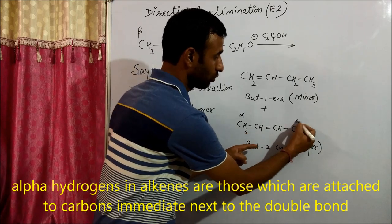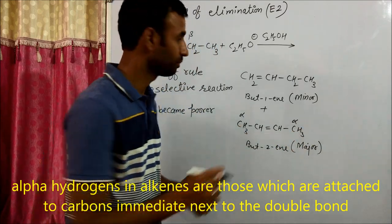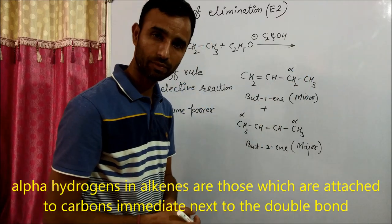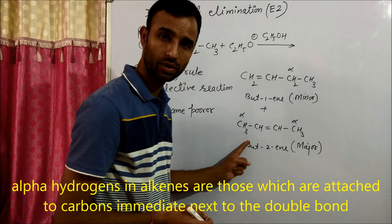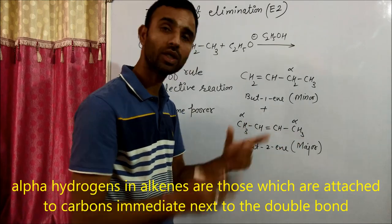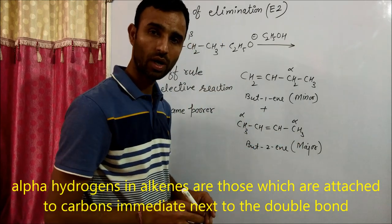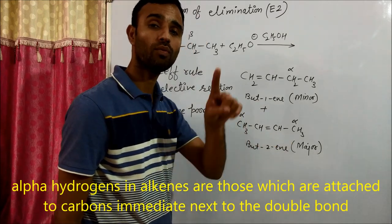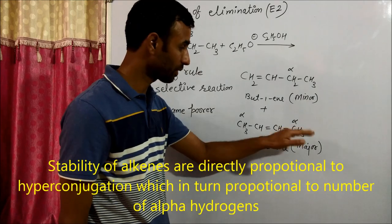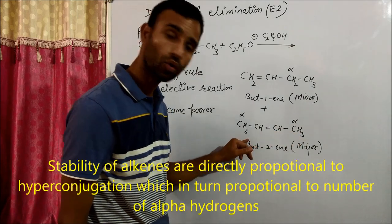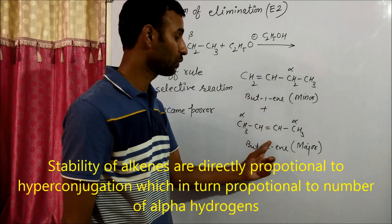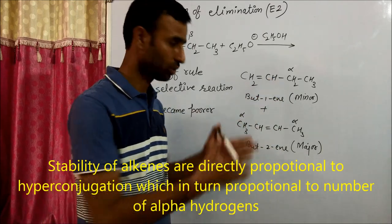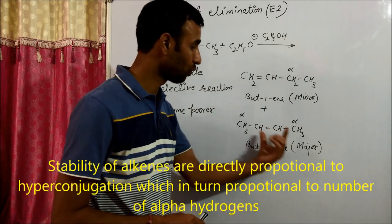You know, carbon attached to double bonds, alpha carbons. There are only two alpha hydrogens here. There are six alpha hydrogens. So hyperconjugation is proportional to number of alpha hydrogens. So hyperconjugation is more in but-2-ene than but-1-ene.